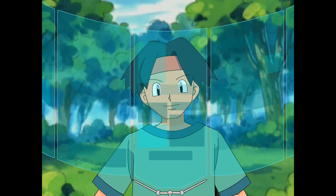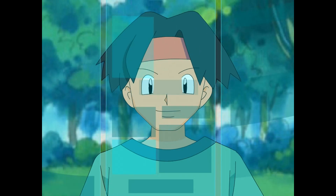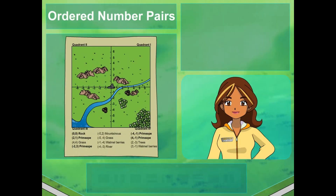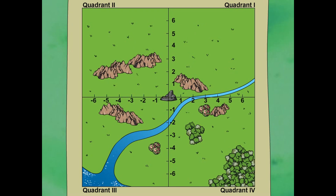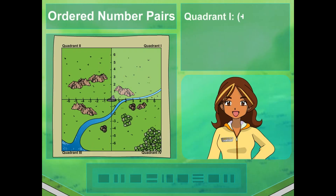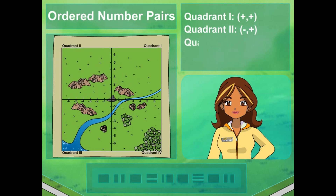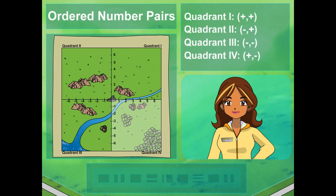You got it — 4 quadrants. See how the numbers along the X axis to the right of the Y axis are positive, but to the left of the Y axis they're negative? And the numbers along the Y axis above the X axis are positive, but the numbers below the X axis are negative? Well, that means both numbers for any ordered pair in quadrant 1 will be positive. In quadrant 2, the X coordinate is always negative while the Y coordinate is always positive. And in quadrant 3, both the X coordinate and the Y coordinate are negative. In quadrant 4, the X coordinate is positive but the Y coordinate is negative. You got it!